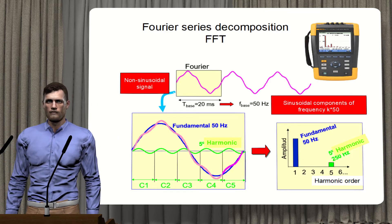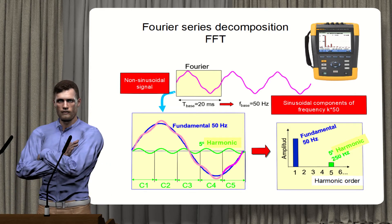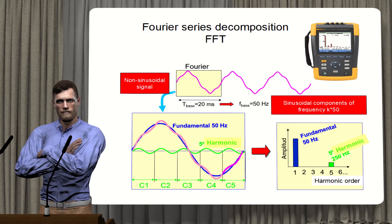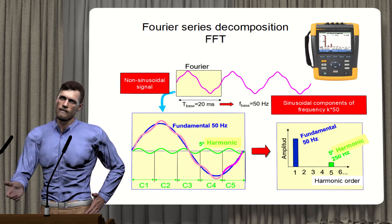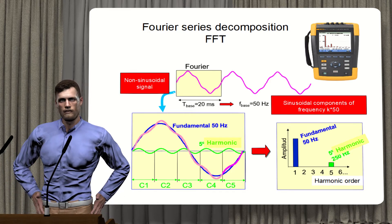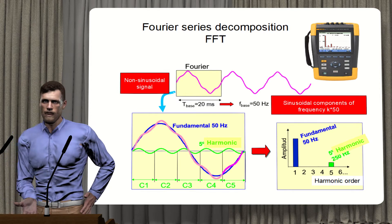Power quality analyzers such as the Fluke 435 integrate the fast Fourier transformation into their measurement functions to carry out precisely the opposite process: decompose the voltage, current or power signal in real-time, in order to obtain the effective values of both the fundamental component as well as the harmonics.